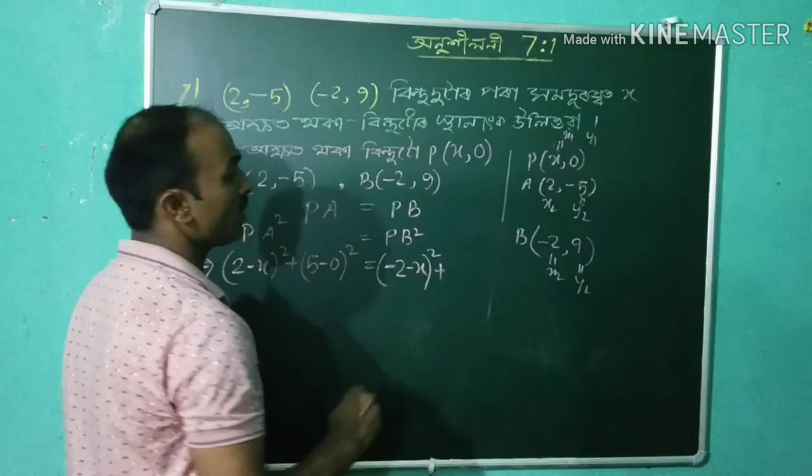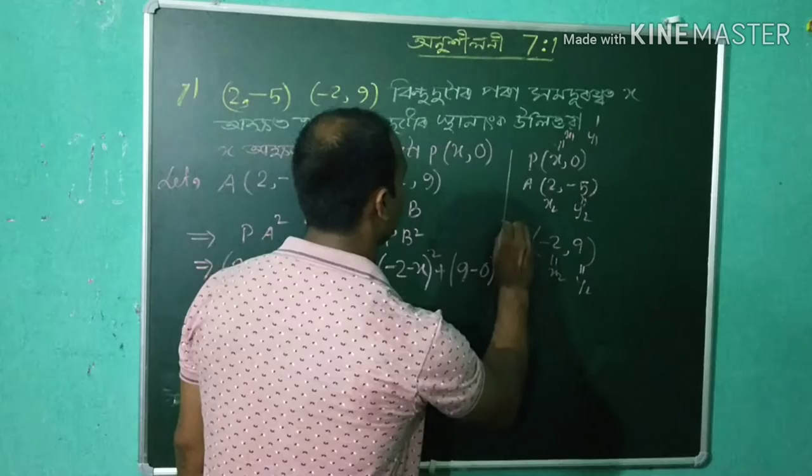We have 9 minus 0 whole square plus 9 minus 0 whole square.